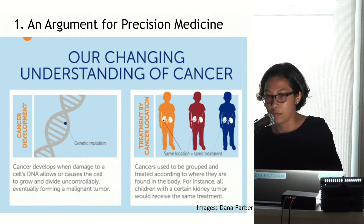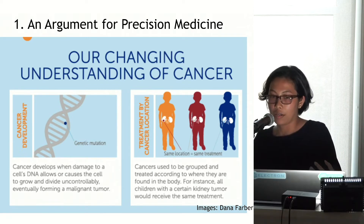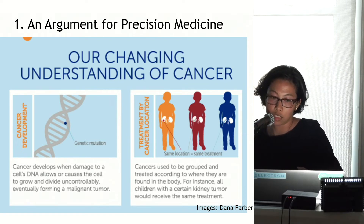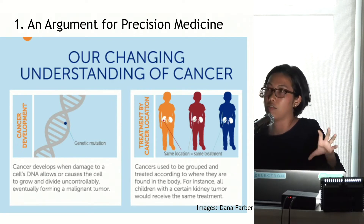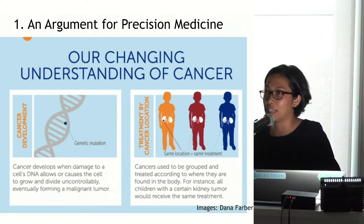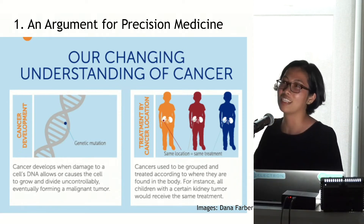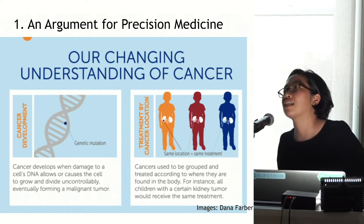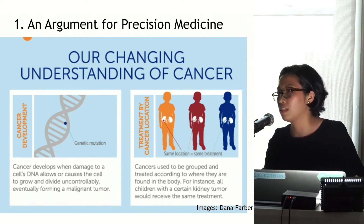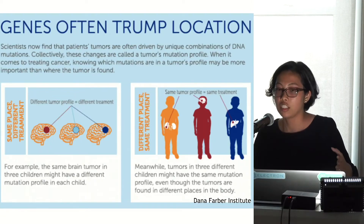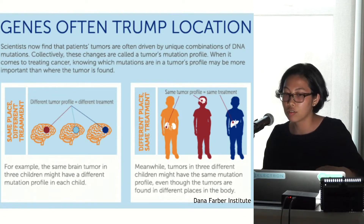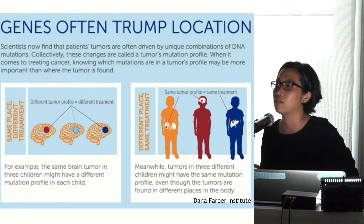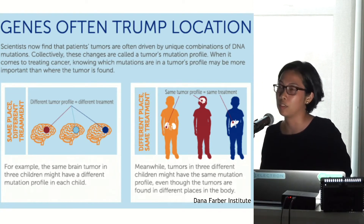The first argument is an argument for precision medicine. We have a changing understanding of how cancer works. Cancer develops because of problems in your genes — genetic mutations that cause the cell to grow and divide uncontrollably, creating malignant masses. Cancer is currently treated based on what organ it's found in, but that's not a great way to treat it because the source is genetic mutation, and genes often trump locations. Your genetic profile, not the physical location of your cancer, is more likely to inform how well your tumor will respond to treatment.